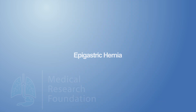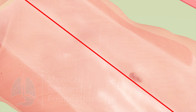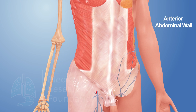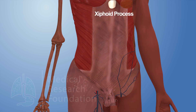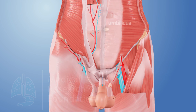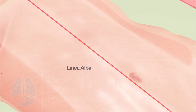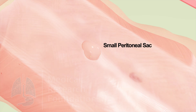Epigastric hernia. The linea alba, a midline fibrous raphe, is formed by the interlacing of aponeurotic fibers of the three paired flat muscles of the anterior abdominal wall. It extends from the xiphoid process to the pubic symphysis. Above the umbilicus it is wider, about one centimeter, and below the umbilicus it is very narrow. It becomes weak in elderly multiparous women and chronically ill children. When intra-abdominal pressure is excessively raised, a small amount of extraperitoneal fat may protrude through the upper part of the linea alba and eventually may drag behind it a small peritoneal sac, which may contain a portion of the greater omentum, forming the epigastric hernia.